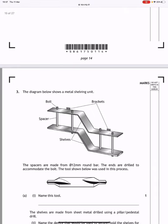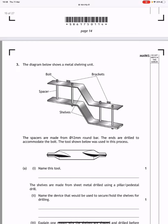The diagram below shows a metal shelving unit with bolts, spacers, brackets, and the shelves themselves. The spacers are made from 12mm diameter round bar. The ends are drilled to accommodate the bolt. The tool shown below is used in this process. Just like when you have to center punch a bit of metal and drill it on a pillar drill, on the lathe you have to use a center tool to center the metal before you drill it. So this is a center drill.